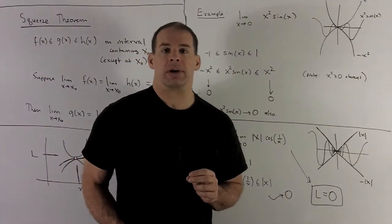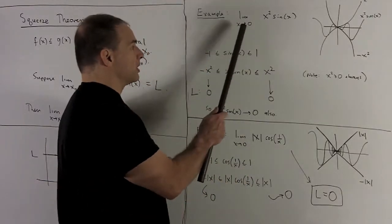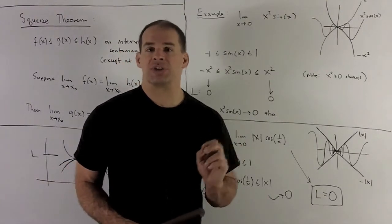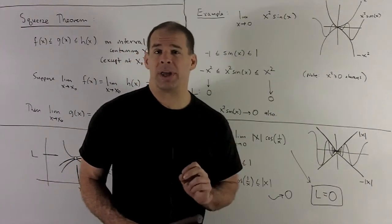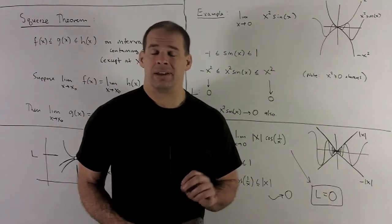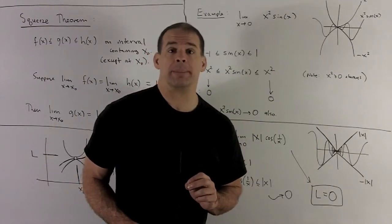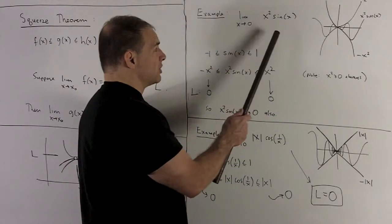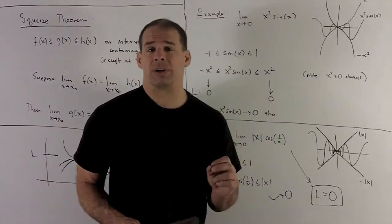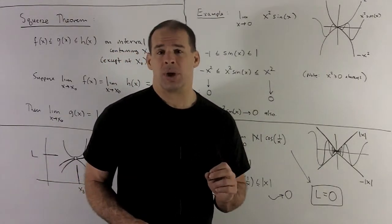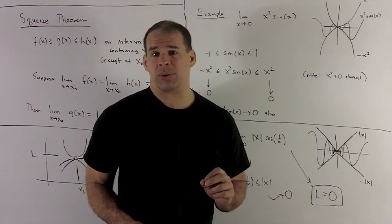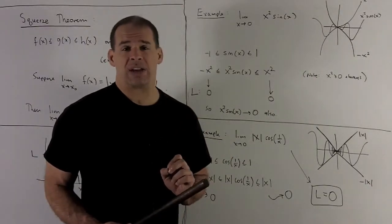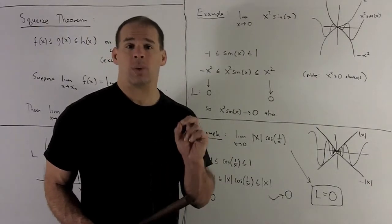Let's see how we'd use the squeeze theorem. Consider the limit as x goes to 0 of x² sin(x). By the heuristic rule, stick zero in: 0² = 0, and sin(0) = 0 — remember, zero is the y-value on the unit circle at angle zero. So this is definitely going to be zero. Let's see how the squeeze theorem applies, just as a case where we believe the answer.